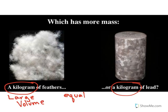You're going to have a large volume of feathers because it takes a lot of feathers to add up to one kilogram. Whereas the lead is going to have a small volume. Lead has a very high density, so it doesn't take very much lead to get a kilogram. Feathers have a very low density, so it takes a lot of feathers before you get a full kilogram.